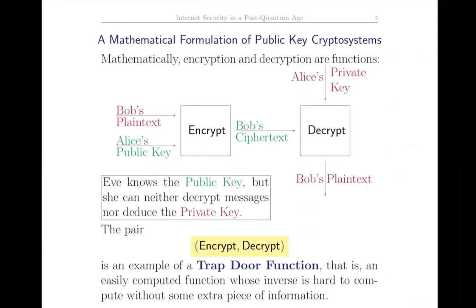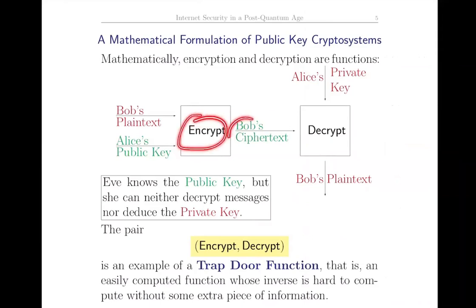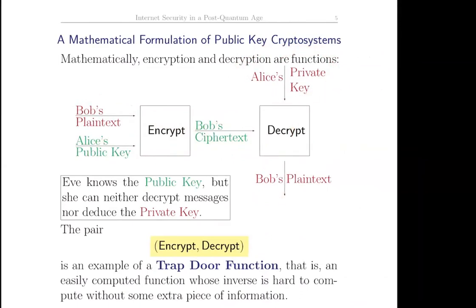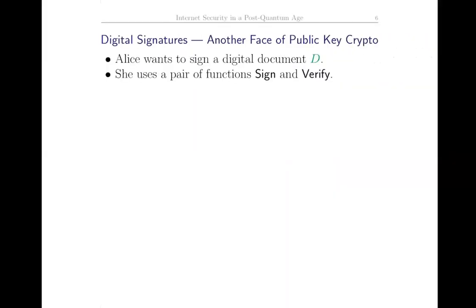The pair of functions encrypt/decrypt is an example of a trapdoor function and its inverse, meaning it's a function that's easy to compute - easy to compute encryption - but hard to compute the inverse, to go from the ciphertext to the plaintext, unless you know this extra piece of information, the trapdoor, which enables you to compute the inverse. Another important side of public key cryptography is digital signatures.